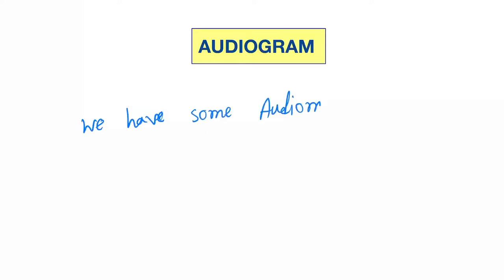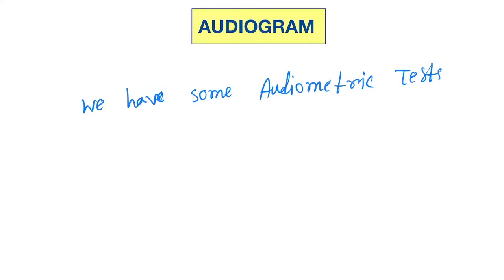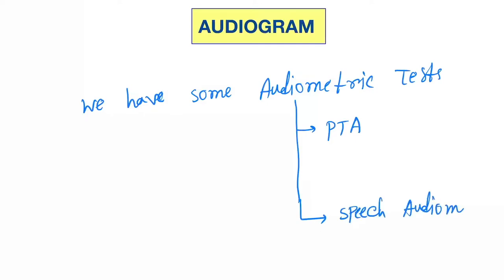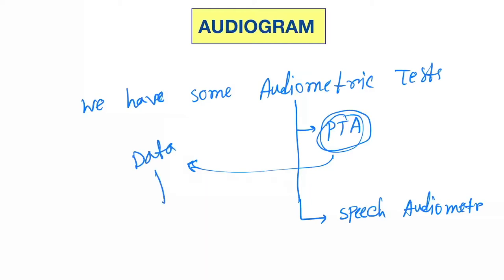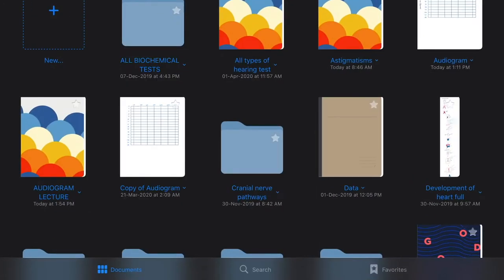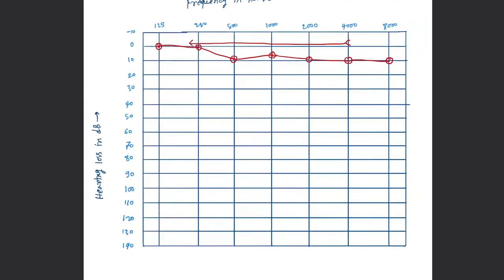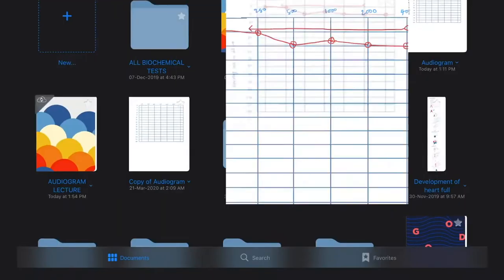Hello friends, today our topic is the audiogram. So what is an audiogram? We have some audiometric tests to check the function of the ear. Under these audiometric tests we have PTA, that is pure tone audiometry, and speech audiometry. After putting all the data from PTA, we get the audiogram.